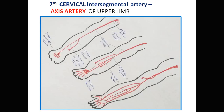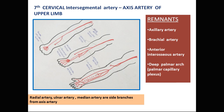The seventh cervical intersegmental artery forms the axis artery of the upper limb. The main arterial trunk grows outwards along the ventral axial line and ends in the palmar capillary plexus. In the adult, the remnants of the axis artery persist as the axillary artery, brachial artery, and anterior interosseous artery. The remnants of the palmar capillary plexus form the deep palmar arch.